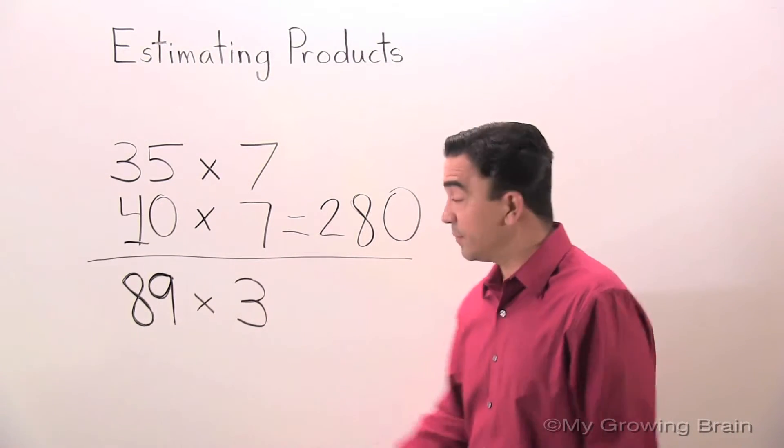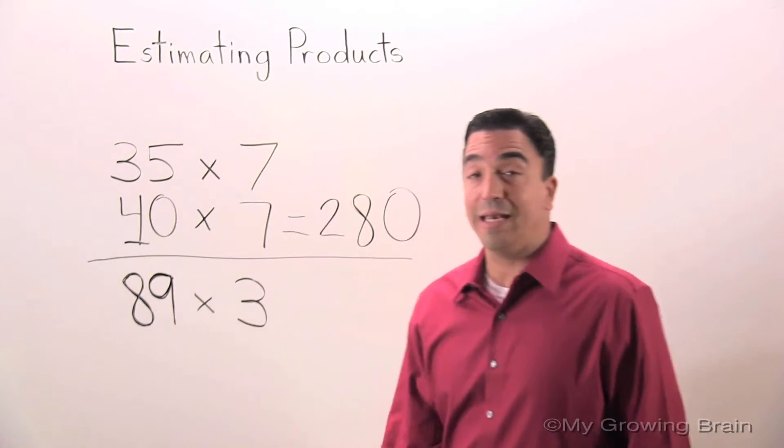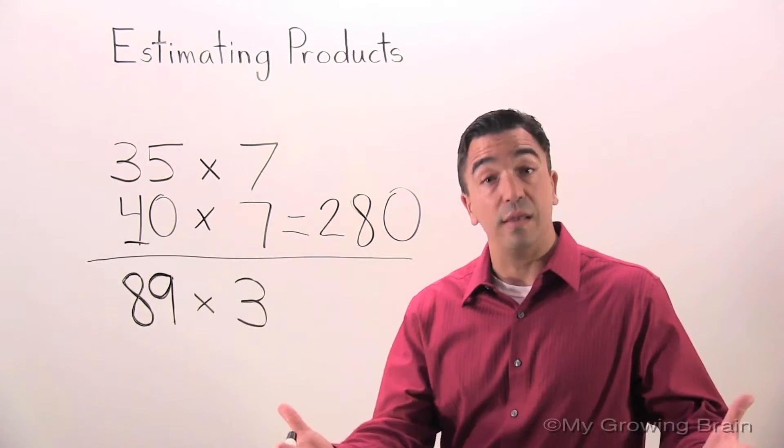Here's our second example. 89 times 3. I'm going to round 89 to the nearest 10, which is 90.